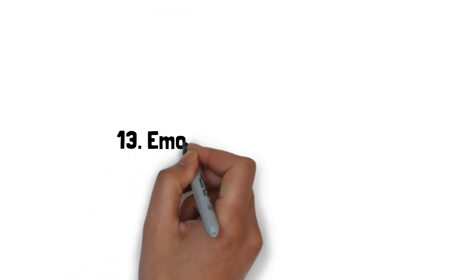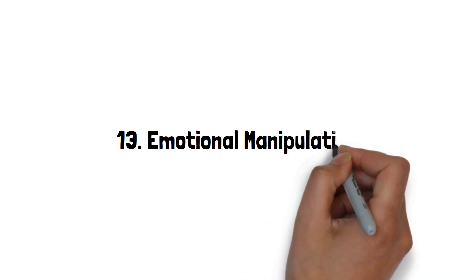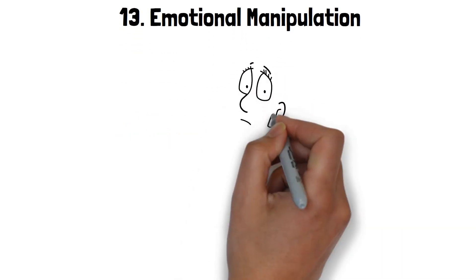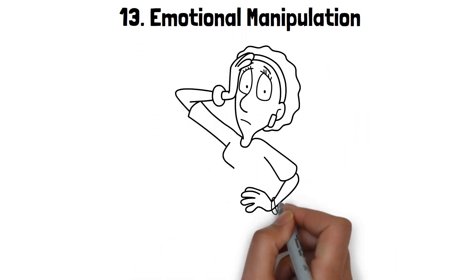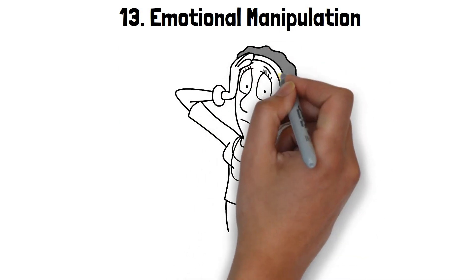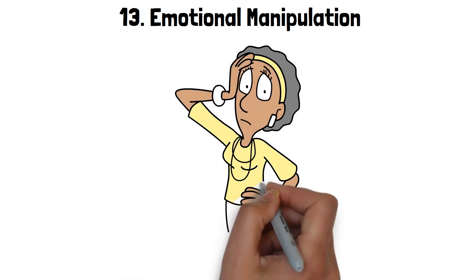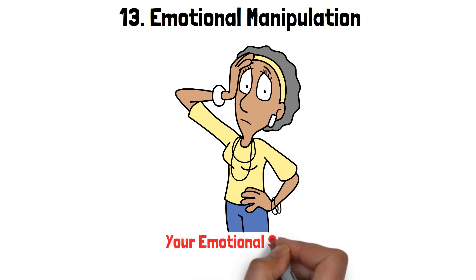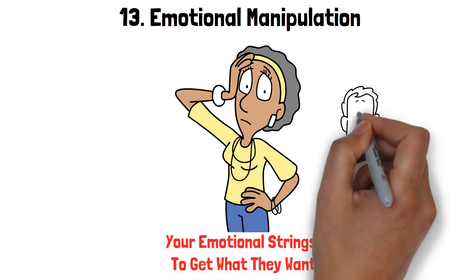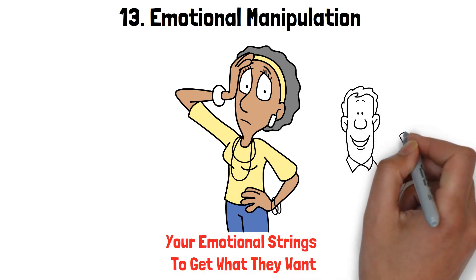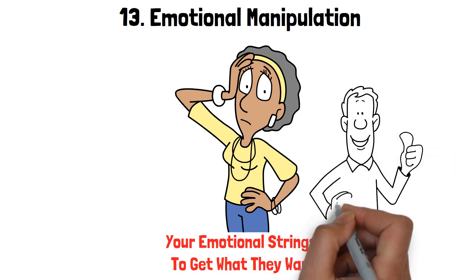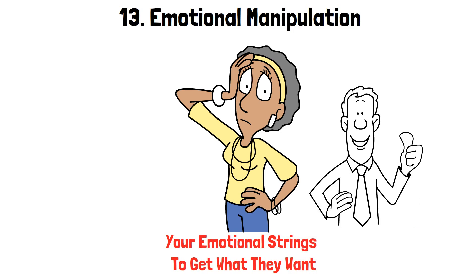13. Emotional Manipulation. Living with a narcissistic wife often means encountering emotional manipulation tactics regularly. These individuals are adept at pulling your emotional strings to get what they want. One common tool in their arsenal is the guilt trip. They'll make you feel responsible for their happiness and use your guilt to manipulate you into compliance.